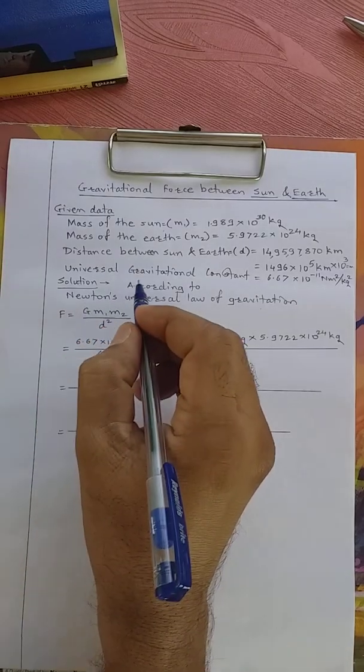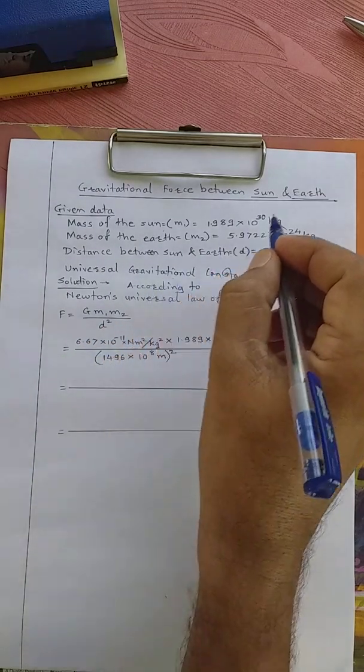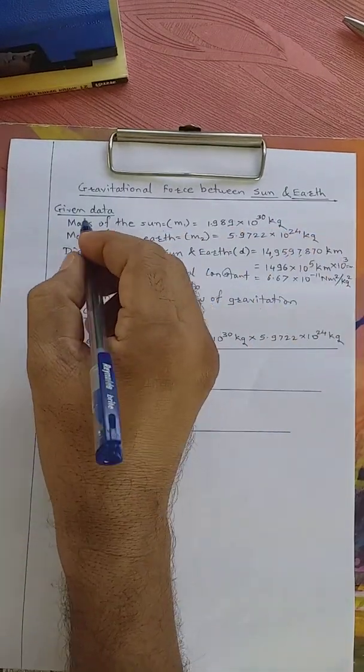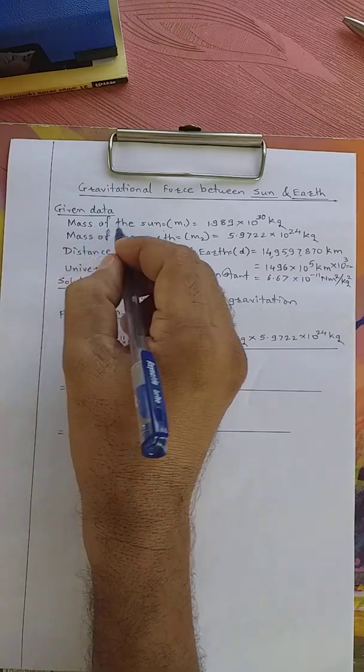How much is the gravitational force between the Sun and Earth? Given data is: